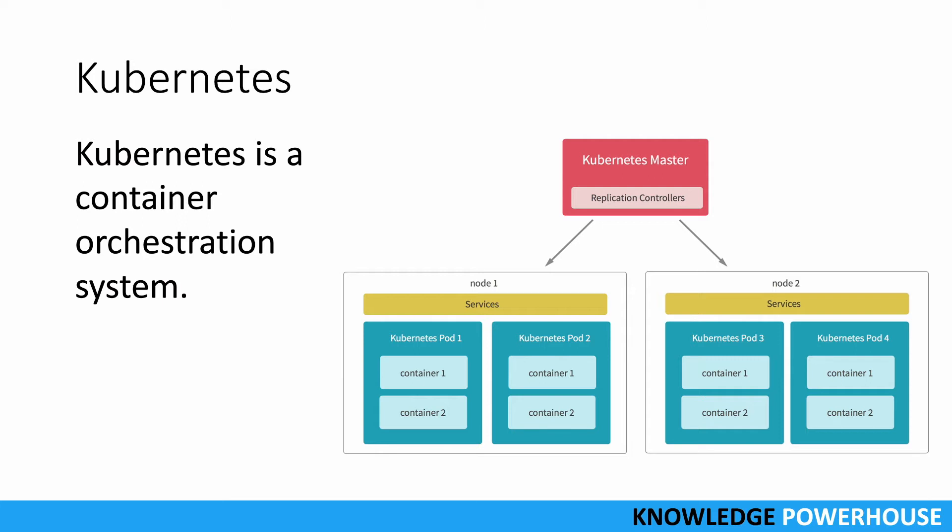The master can control how many replicas you need. If you want five containers to run, you can use the master to replicate them. These replications will span multiple nodes, and on each node you have pods, and within a pod you can have multiple containers. Try to understand this diagram - it will be very helpful when describing it in an interview.